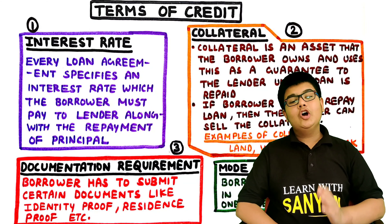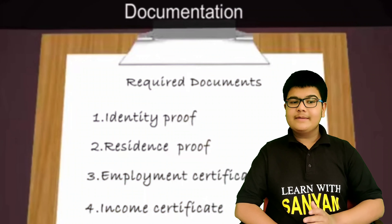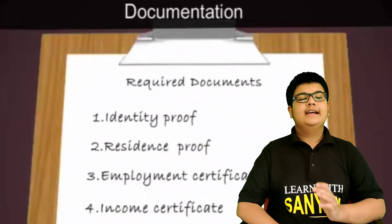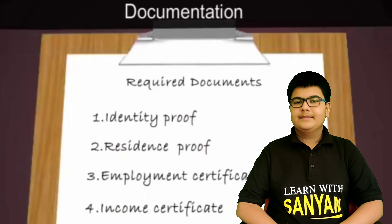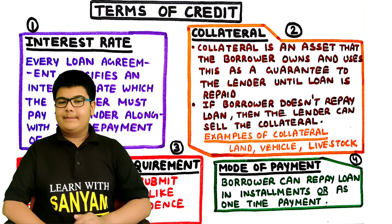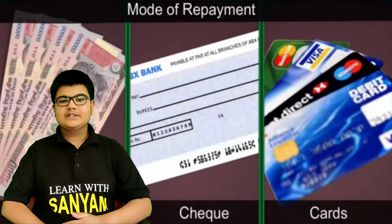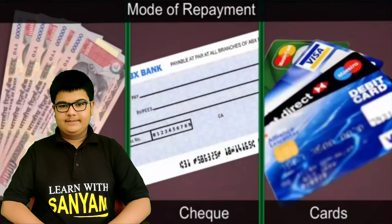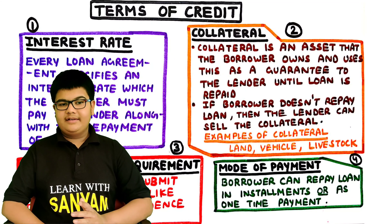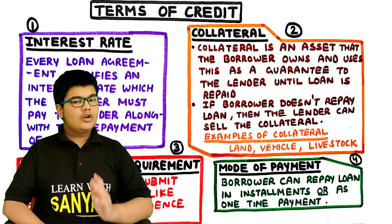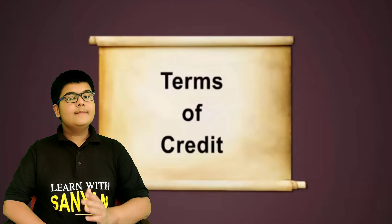Third is documentation requirement. The borrower has to submit certain documents like identity proof, residence proof, etc. Fourth is mode of payment — the borrower can repay the loan in installments or as a one-time payment. All these things — interest rate, collateral, documentation requirement, and mode of payment — together are called the terms of credit.